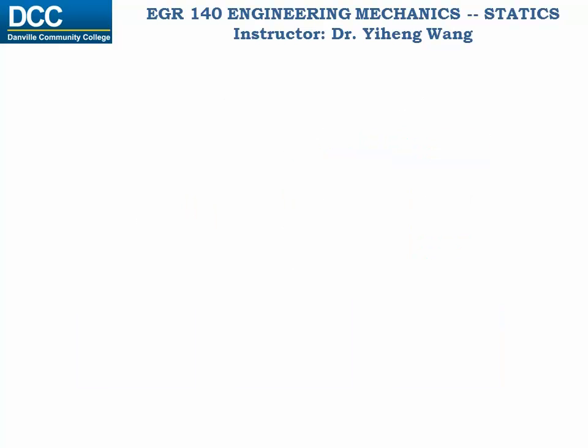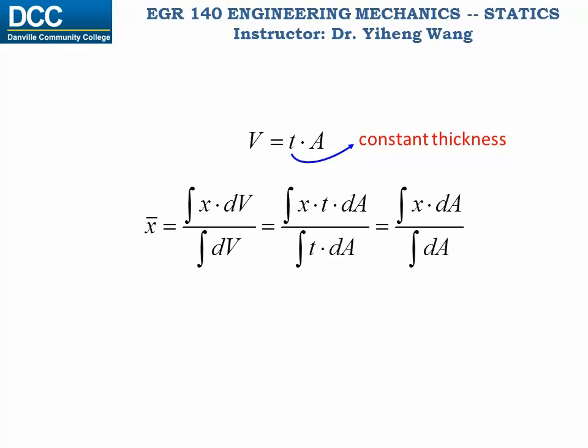If the volume has a uniform thickness, then we can further reduce the situation from 3D to two-dimensional and cancel out the thickness from this equation. Now we have coordinates for the centroid of an area.